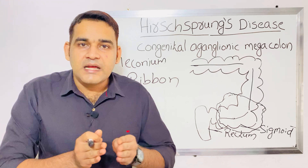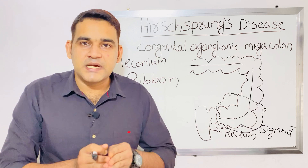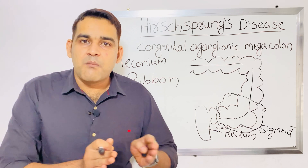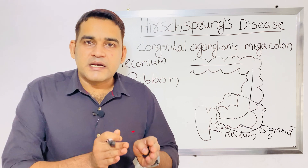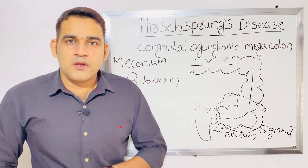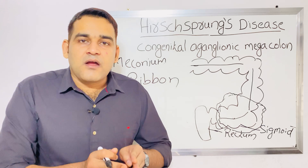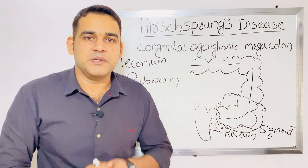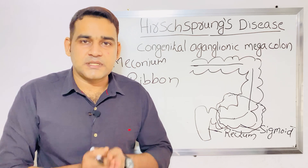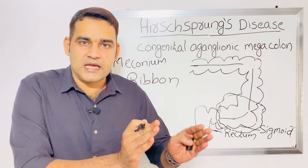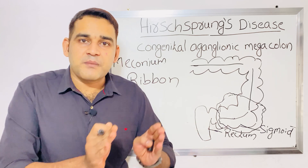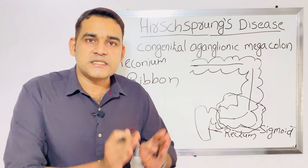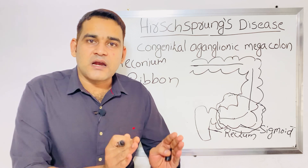Regarding the confirmatory test: rectal biopsy is the confirmatory test for Hirschsprung disease. In the rectal biopsy, you will find absence of ganglion cells. Absence of ganglion cells on rectal biopsy confirms the diagnosis.